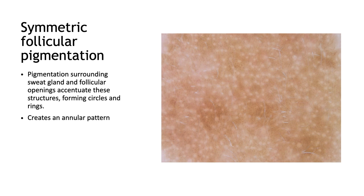For me, the toughest feature is symmetric follicular pigmentation, because it's the thing that can be confused with lentigo maligna. This typically occurs on the face, and it is pigmentation surrounding the sweat glands and follicular openings that accentuates these structures, forming circles and rings and creating an annular pattern. These circles are symmetric, in contrast to lentigo maligna, which has asymmetric pigmentation.